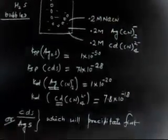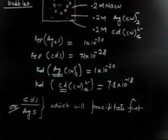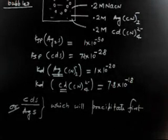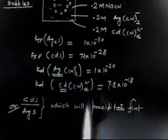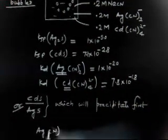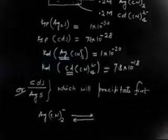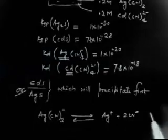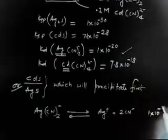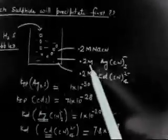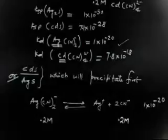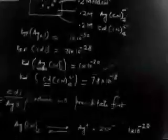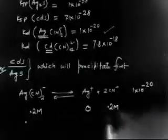Let's discuss the equilibrium. KD for Ag(CN)₂⁻ means: Ag(CN)₂⁻ ⇌ Ag⁺ + 2CN⁻, with equilibrium constant 1×10⁻²⁰. The concentration of Ag(CN)₂⁻ is 0.2M. The CN⁻ concentration is also 0.2M, the same as the NaCN concentration.